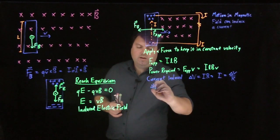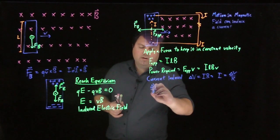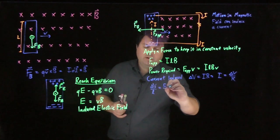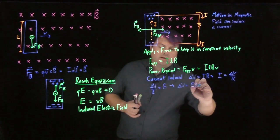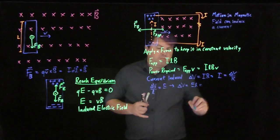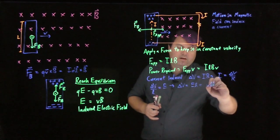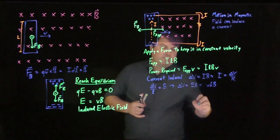We know that our E is equal to VB. So our delta V over L is equal to E. Therefore, delta V is equal to E times L. E is equal to VB. So we have VLB is our delta V.